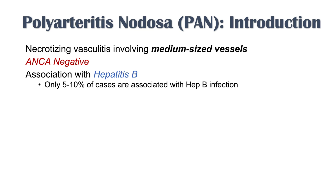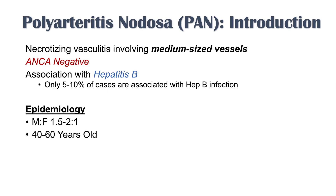With regards to the epidemiology of PAN, there is a male to female ratio of around 1.5 to 2 to 1, so males are more affected — usually about double the number compared to females. This condition typically occurs between the ages of 40 and 60 years of age, and it has systemic involvement wherever there are medium-sized vessels.